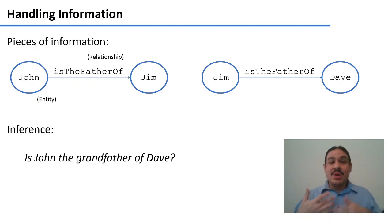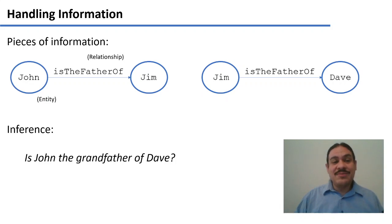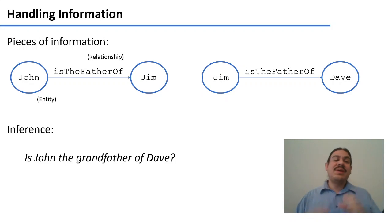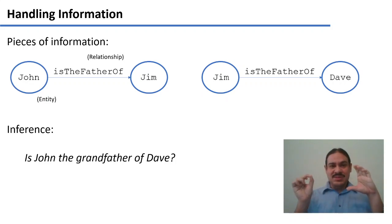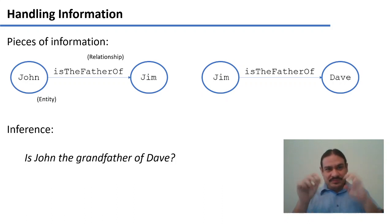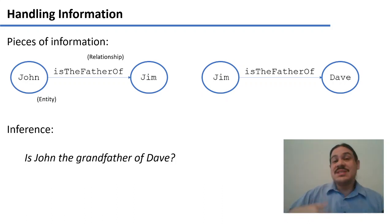There's also knowledge graphs, which have entities like John and Jim which are of type person, and they're linked together by a relationship. For example, John and Jim are linked by the relationship 'is the father of.' This is more like a knowledge graph.